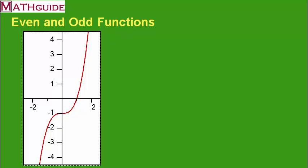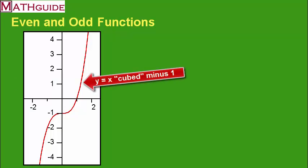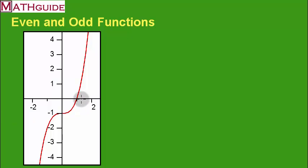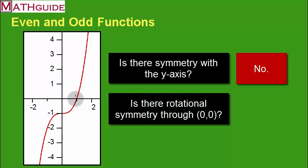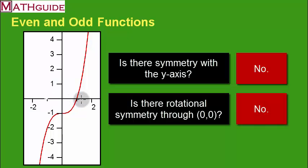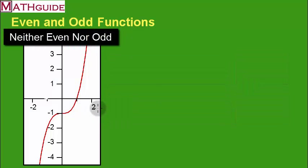This is the equation y equals x cubed minus 1. Is it even or odd? Over here, at x equals 1, the y value is 0. If it were even, going to negative 1 should also give 0 — but it doesn't. For odd, putting in negative 1 should give the opposite of 0, which would still be 0 — but that's not happening either. So it doesn't have rotational symmetry with respect to the origin. It's neither even nor odd.